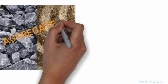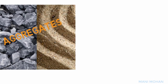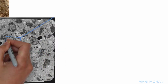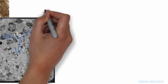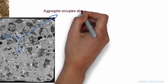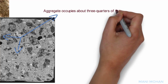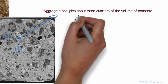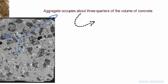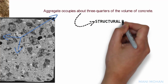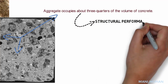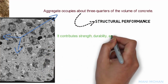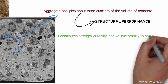Aggregates occupy about three-quarters of the volume of concrete, and contribute significantly to the structural performance of concrete, especially strength, durability, and volume stability.